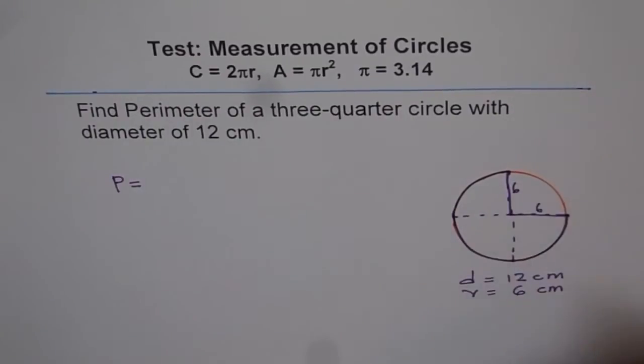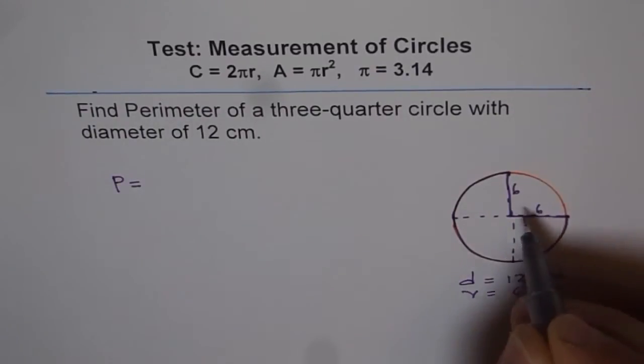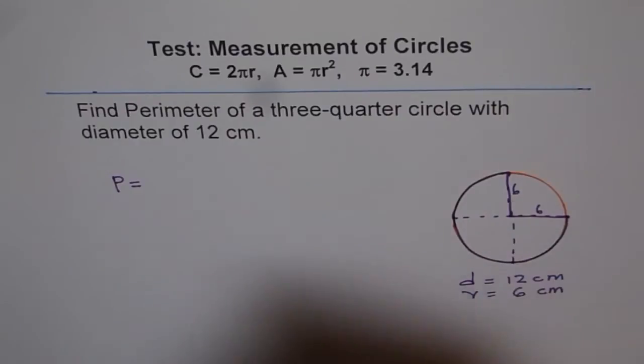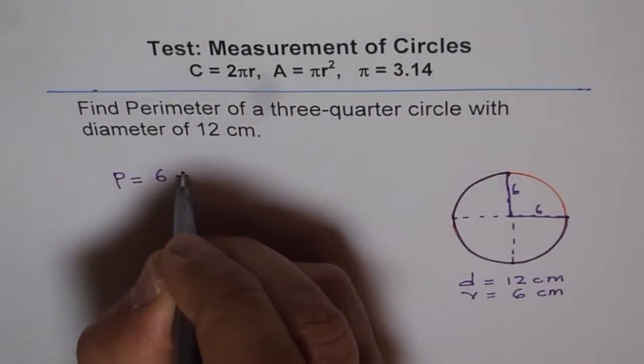So each side is 6. Correct. So we will add these two sides. Don't forget about those two sides. 6 cm.